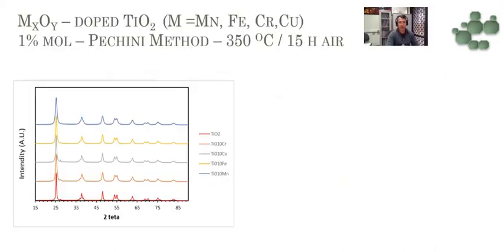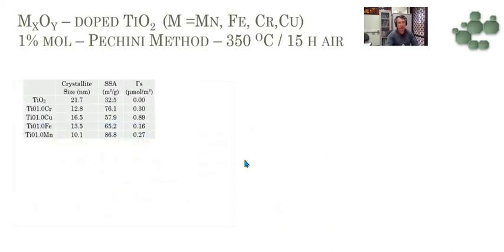We have more results, this time for titanium oxide containing transition metal oxides such as manganese, iron, chromium, and copper oxide — one percent each, prepared by the Pechini method at 350°C for 15 hours in air. The phase present is just anatase. The crystallite size decreases with doping for all samples, and the specific surface area increases with doping. This leads us to think about segregation, and the surface excess confirms this. We observe surface segregation for chromium, copper, iron, and manganese in different proportions.